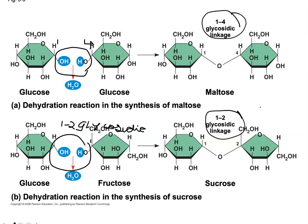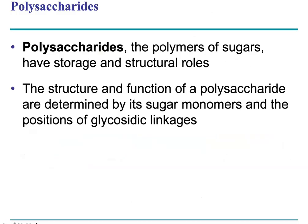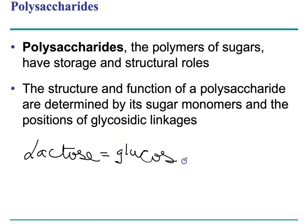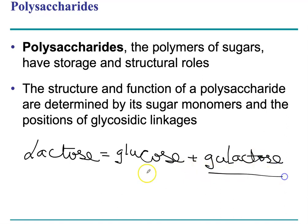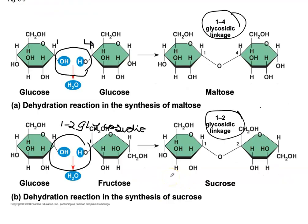The next one we have is lactose. Lactose and galactose are going to form a 1,4 glycosidic bond — glucose plus galactose. These two are enantiomers, mirror images of one another, so they also form a 1,4 glycosidic bond. Maltose and lactose both have 1,4 glycosidic bonds. Glucose and fructose form sucrose, which has a 1,2 glycosidic bond, and fructose and glucose are isomers.